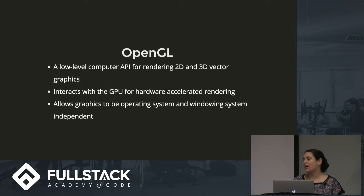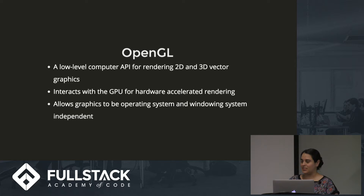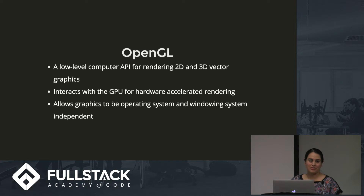OpenGL is a low-level API for graphics rendering written in C. It has language bindings in C, C++, Fortran, and Java. It interacts with the GPU to do hardware accelerated rendering, and it makes graphics operating system and windowing system free.